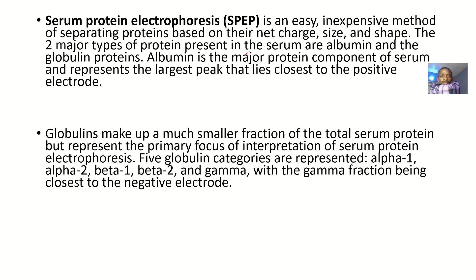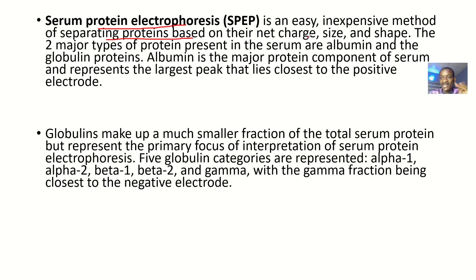Serum protein electrophoresis is an easy, inexpensive method of separating proteins, and this is based on their net charge, their size, and shape. The two major types of proteins present in the serum are albumin and globulin proteins.